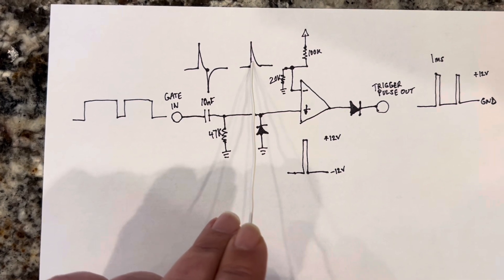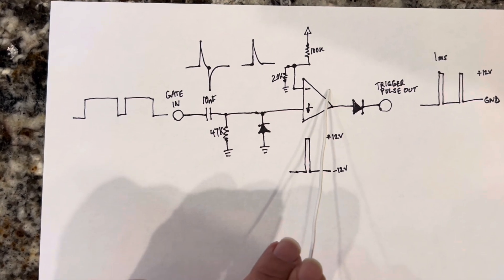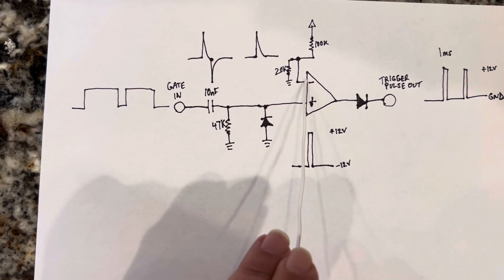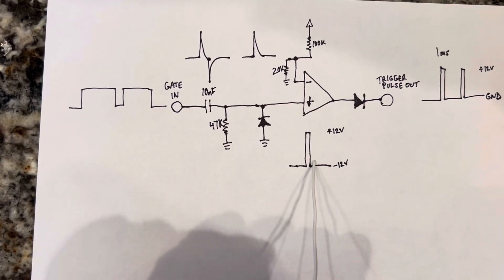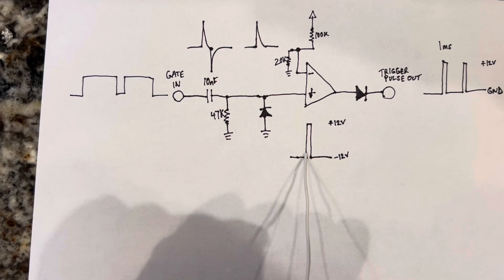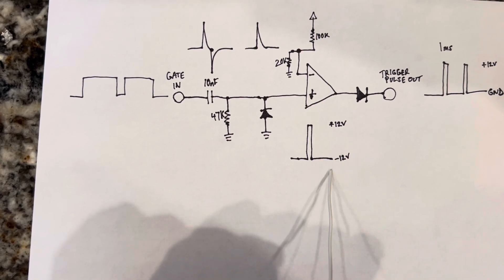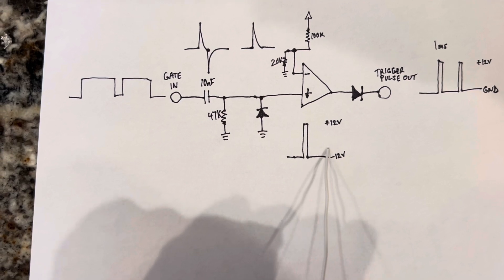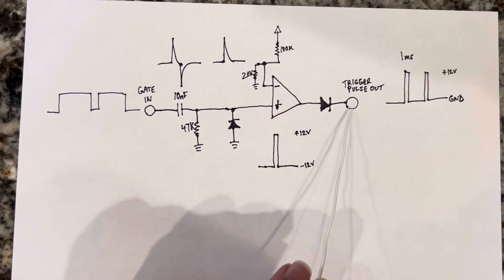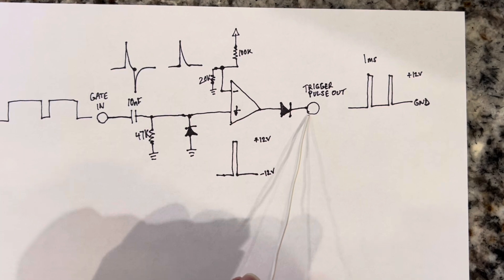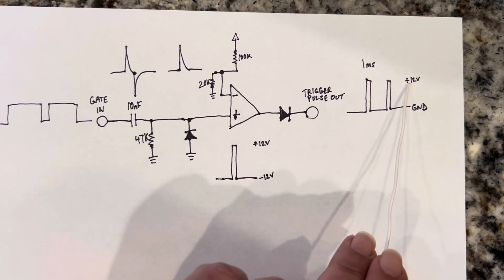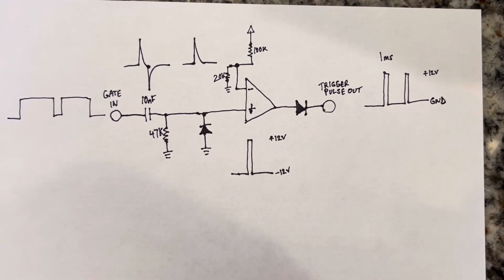Every time the spike exceeds 2.2 volts, the op-amp output swings to positive 12 volts. When it falls below the 2.2 volt reference, it swings down to negative 12 volts. This produces a very short square wave pulse swinging between positive and negative 12 volts. To remove the negative voltage, a diode blocks it, leaving the final output: a one millisecond pulse between 12 volts and ground. That's the gate-to-trigger converter.